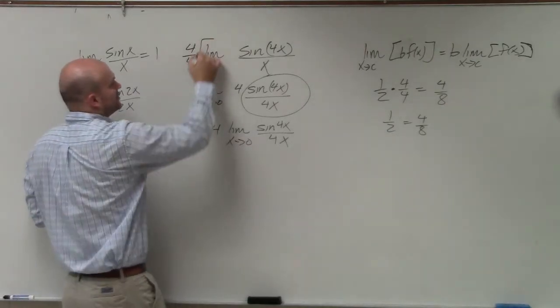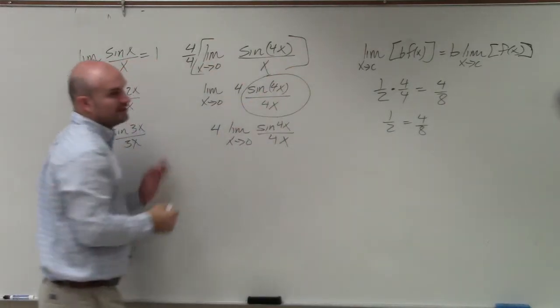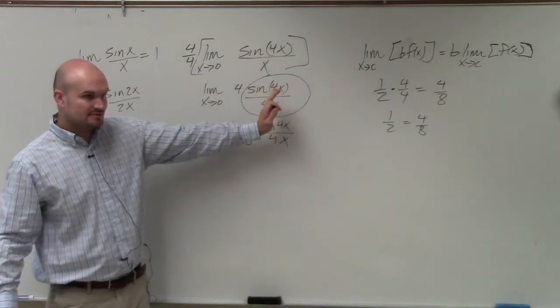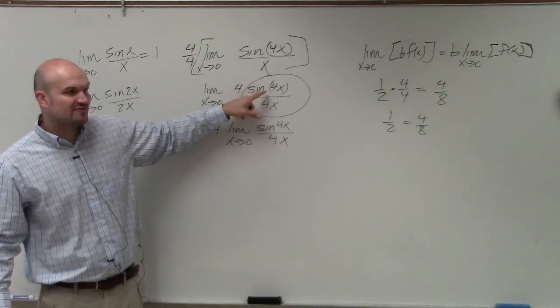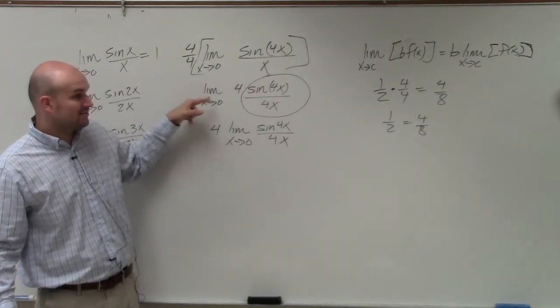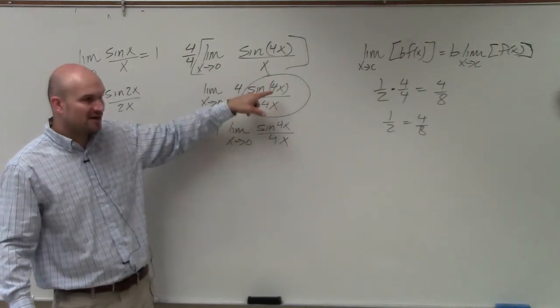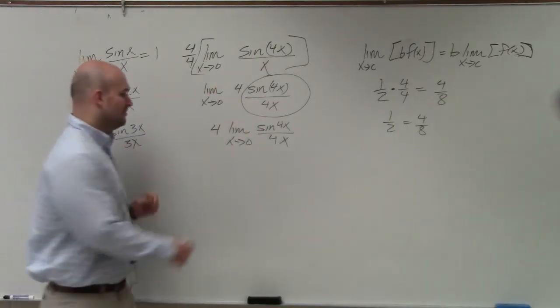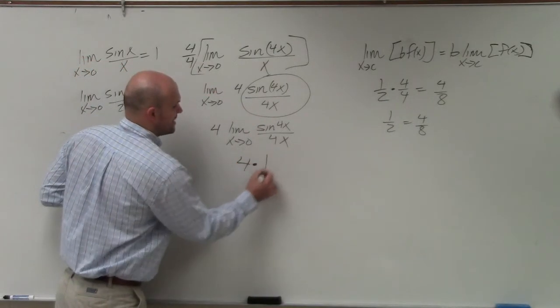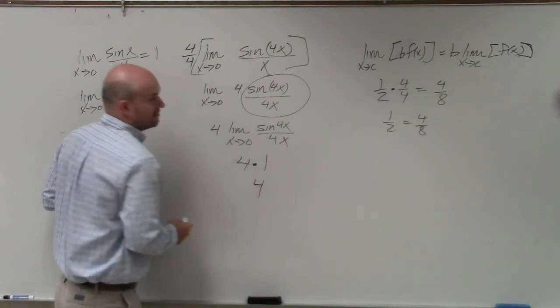So if you multiply this on the outside, you can multiply on the inside. I want to group this together because what's the limit as x approaches 0 of sine of 4x divided by 4x? That's now going to be equal to 1. So we basically have 4 times 1 equals 4.